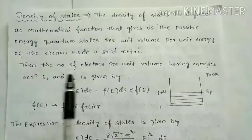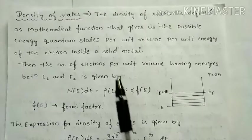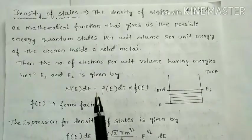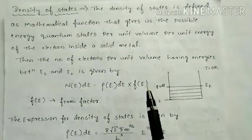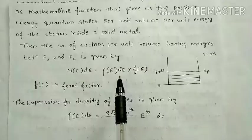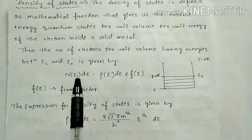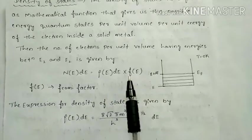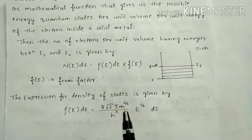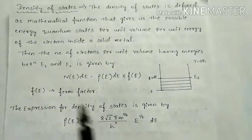The number of electrons per unit volume having energies between E1 and E2 is given by: N(E)dE = ρ(E)dE × F(E), where F(E) is the Fermi factor, which we have already discussed. Here, ρ(E)dE is called the density of states. To find the total number of electrons per unit volume, you multiply the density of states by the Fermi factor. The expression for density of states is: ρ(E)dE = (8√2 π m^(3/2)) / h³ × E^(1/2) dE.